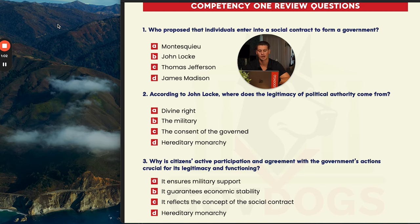Number two: according to John Locke, where does the legitimacy of political authority come from? A is divine right, B is the military, C is the consent of the governed, and D is a hereditary monarchy. John Locke was not a fan of monarchies, so we can immediately get rid of D. Divine right — not necessarily what he was thinking. B, the military — absolutely not. So C is going to be the correct answer: the consent of the governed.